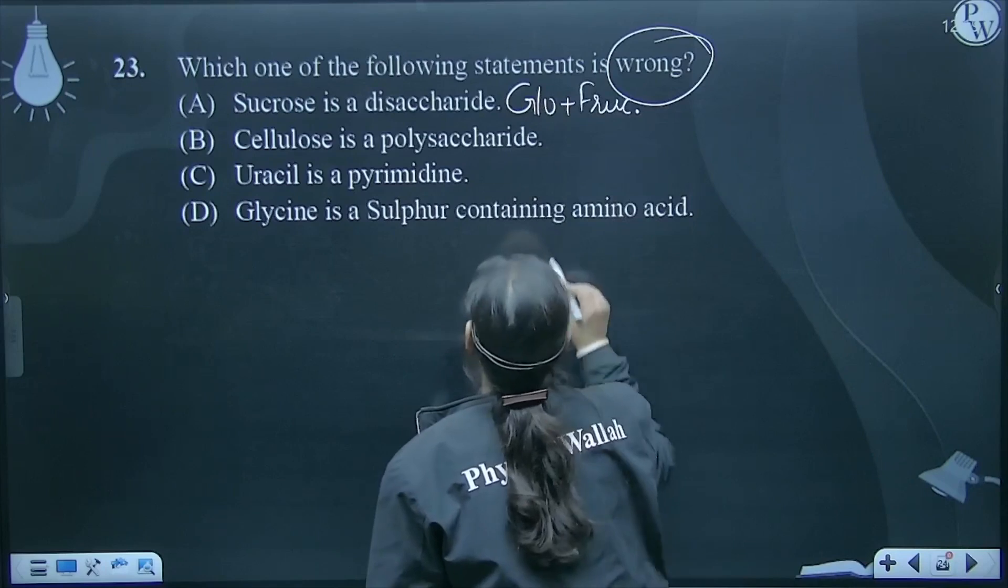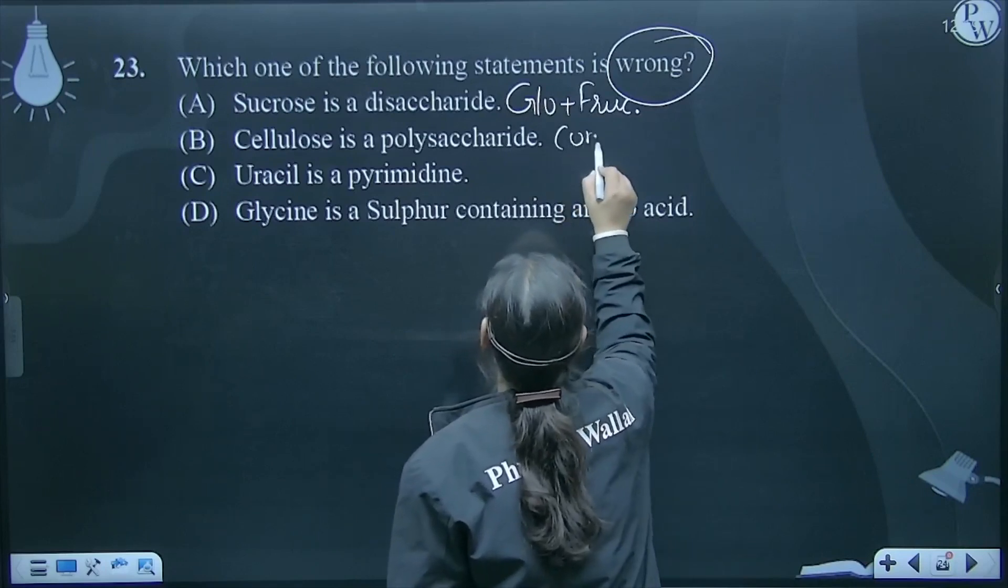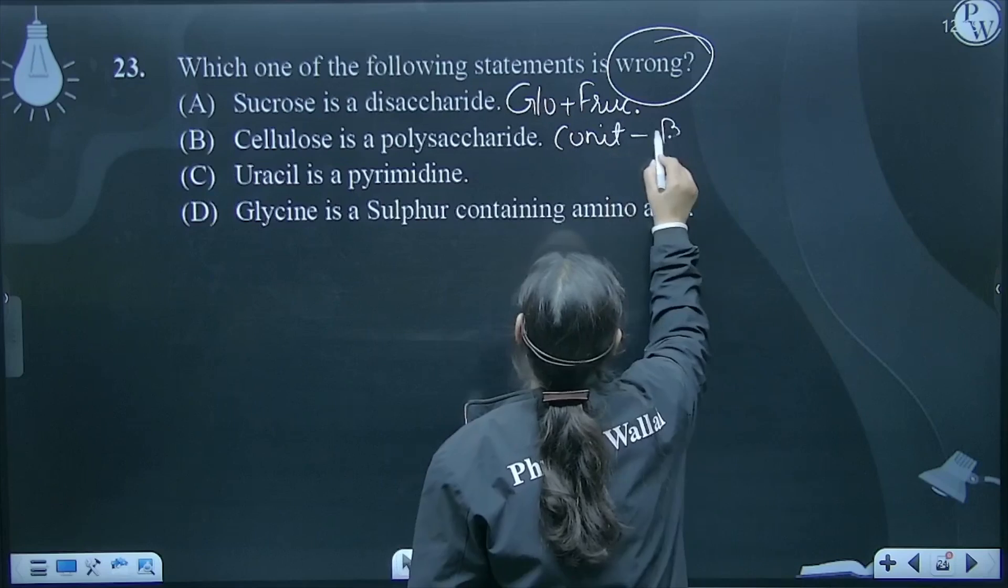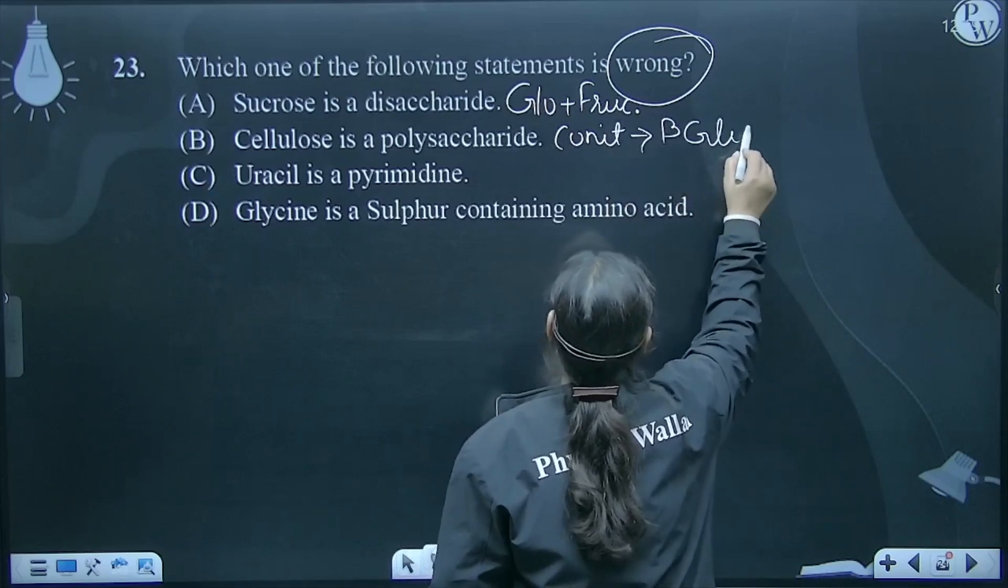Cellulose is a polysaccharide? Yes, its unit is beta-glucose.